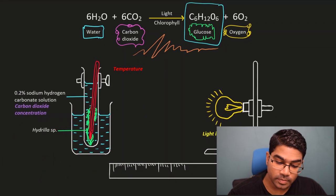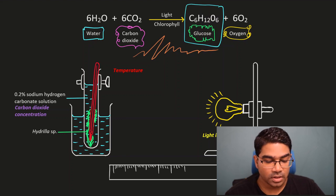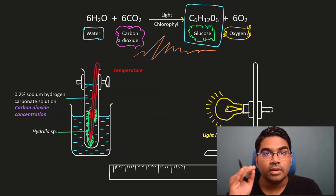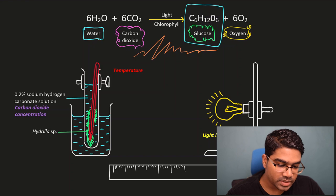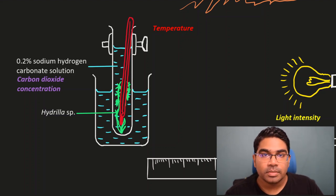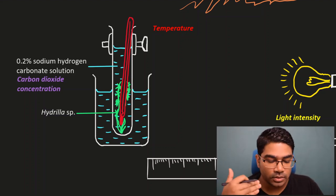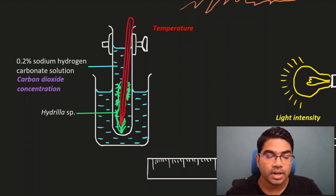Now let's look at the experimental setup. When we want to measure the rate of photosynthesis, we need the plant and all conditions for photosynthesis. Out of the three factors, we must always keep two constant and only manipulate one. We use a Hydrilla species, an aquatic plant submerged in 0.2% sodium hydrogen carbonate solution. The function of this solution is to provide carbon dioxide — the higher the concentration, the higher the CO2 supplied to the plant.